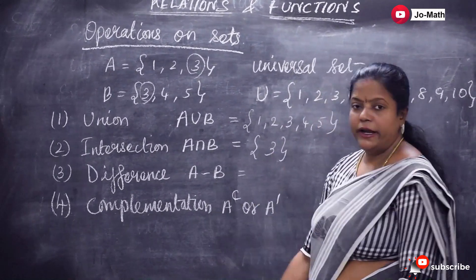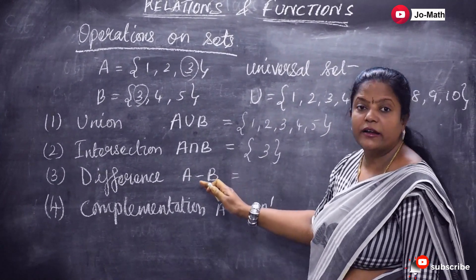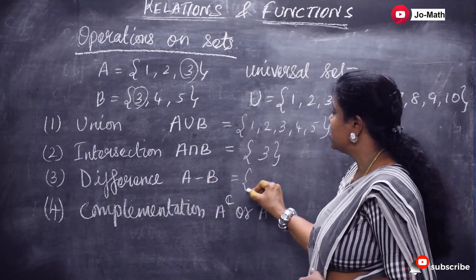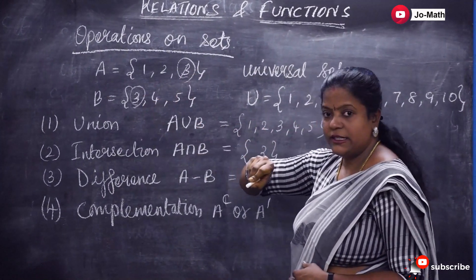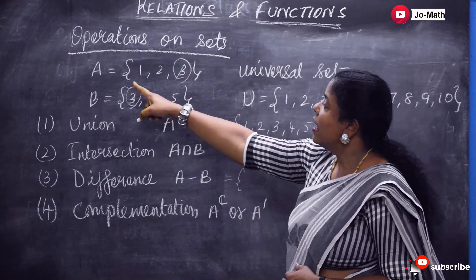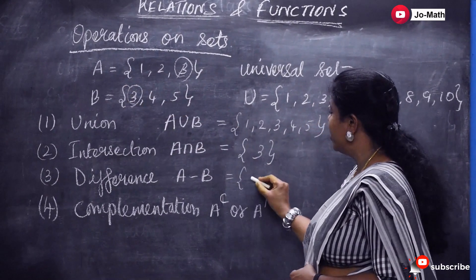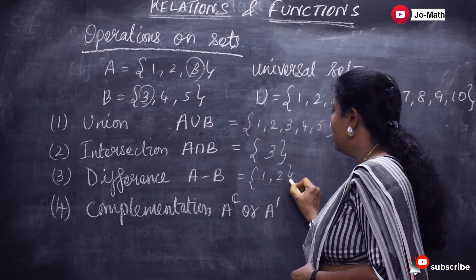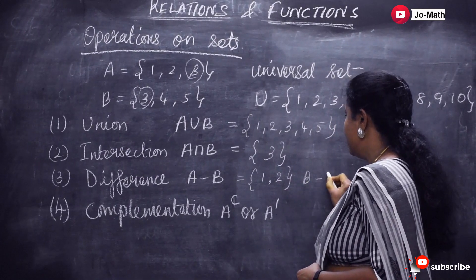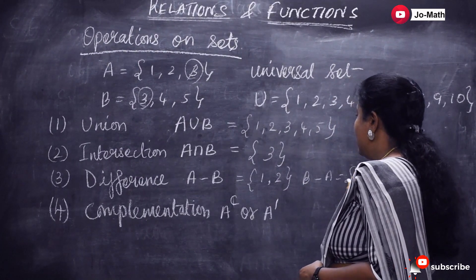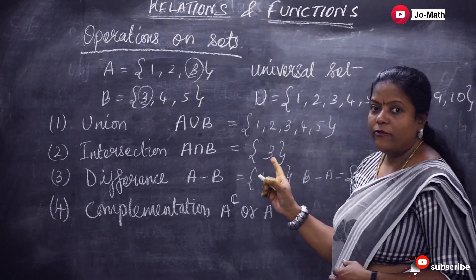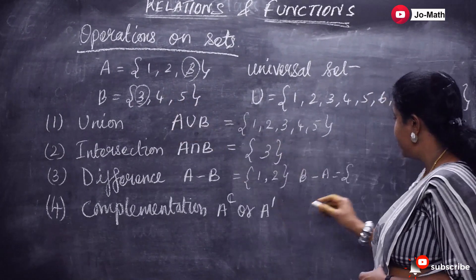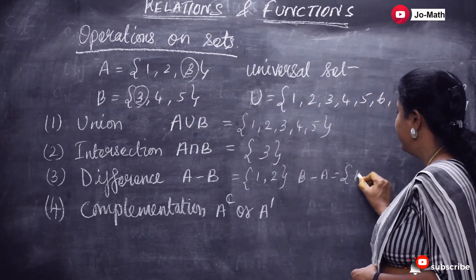And then A minus B is nothing but subtracting set B from A. That is, if you cancel the elements of B that appear in A and then take the remaining elements of A, that gives you A minus B. And if you want B minus A, you subtract the elements of set A from set B. Then the remaining elements of B are 4 and 5.